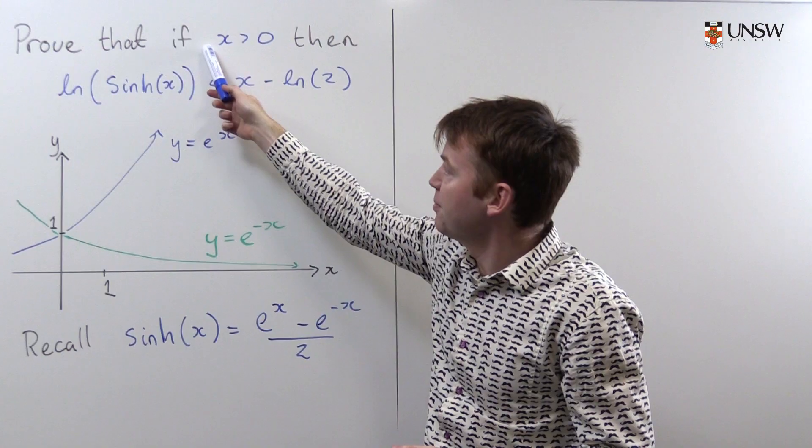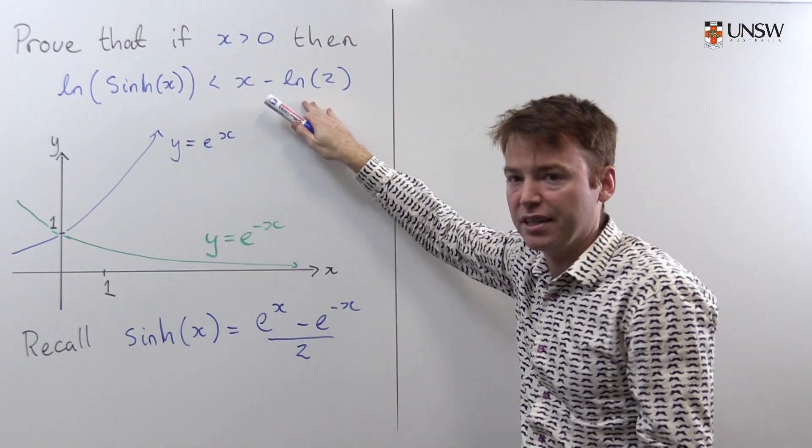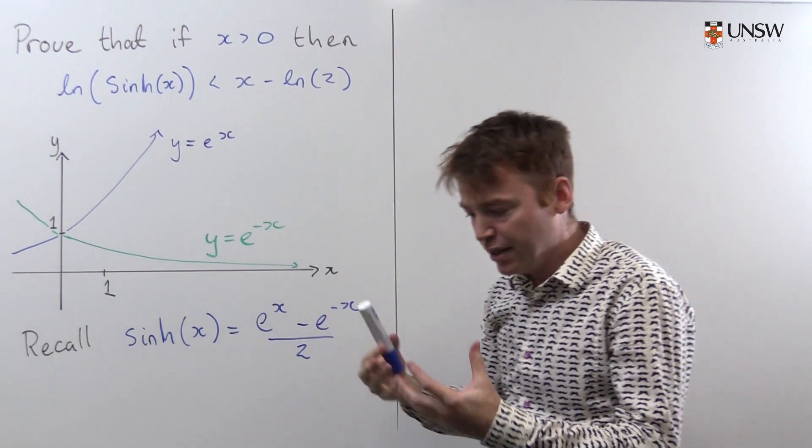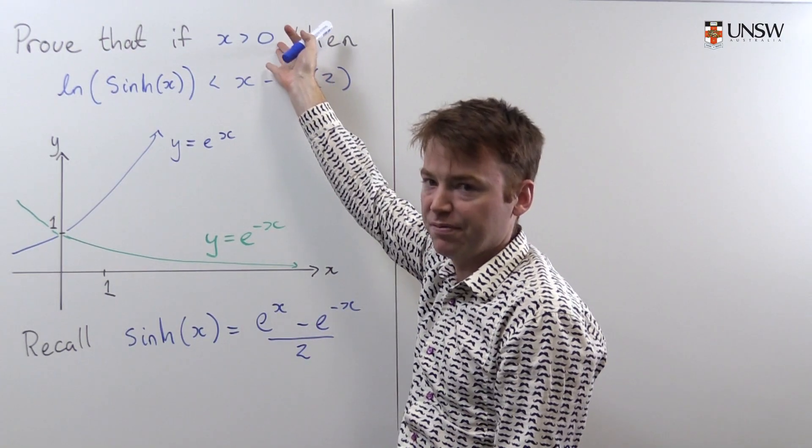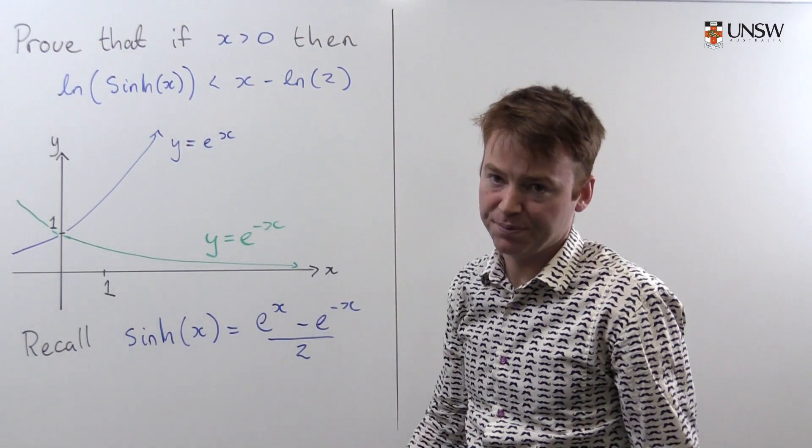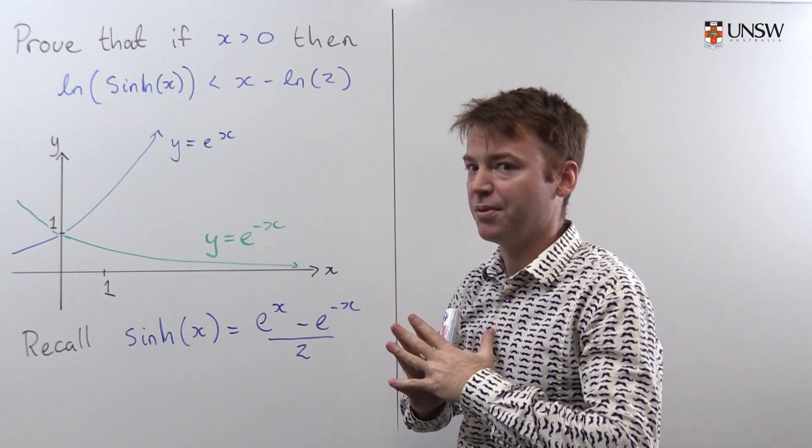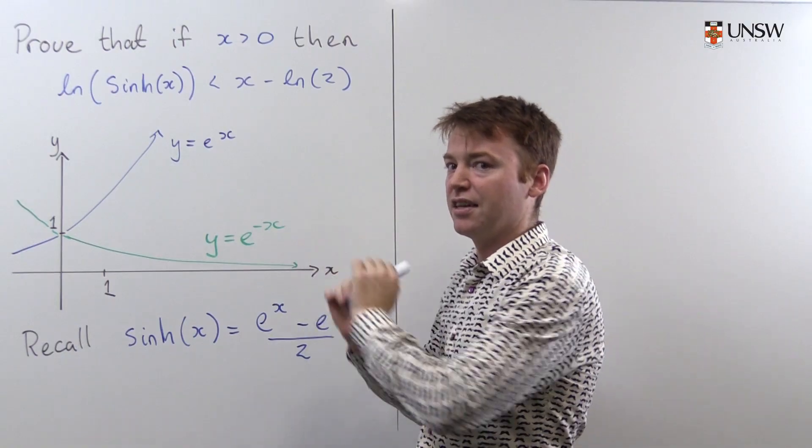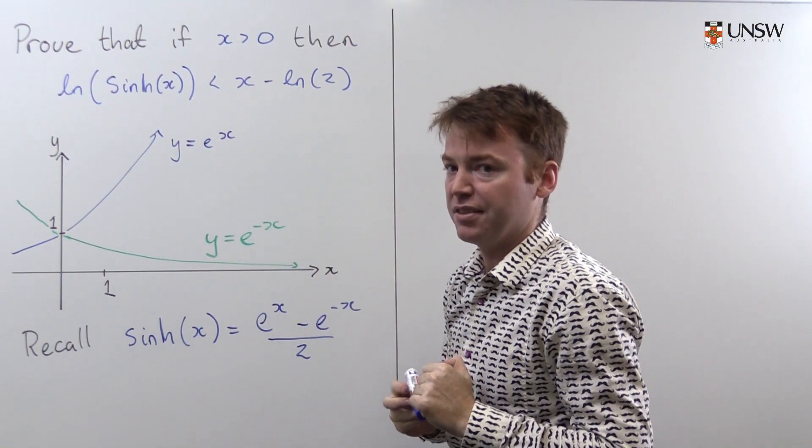It says that starting from the assumption that x is greater than zero, conclude this statement here holds. So the proof is a story. The start of the story is that x is greater than zero. The end of the story is that the natural log of hyperbolic sine is less than x minus natural log 2. Like a good murder mystery novelist we're going to write this story starting at the end and then work backwards to the statement x is greater than zero.